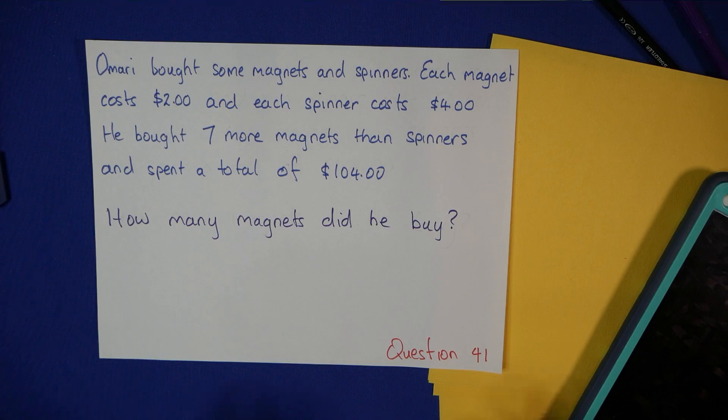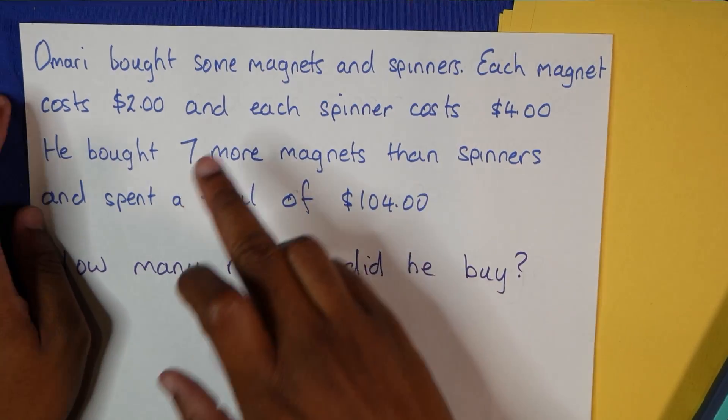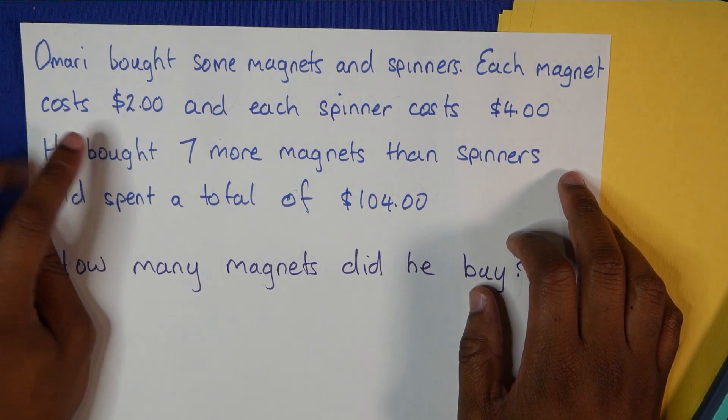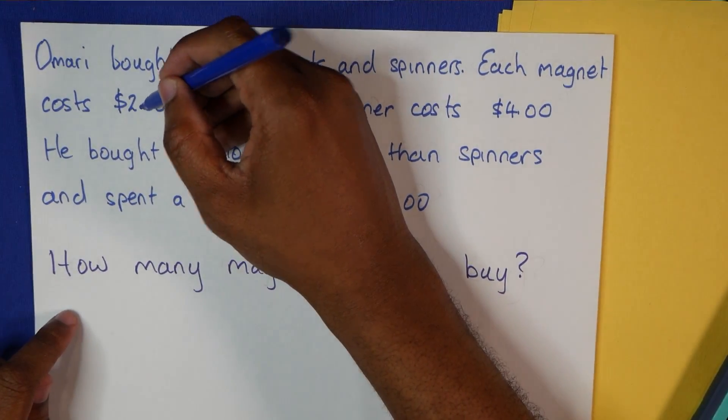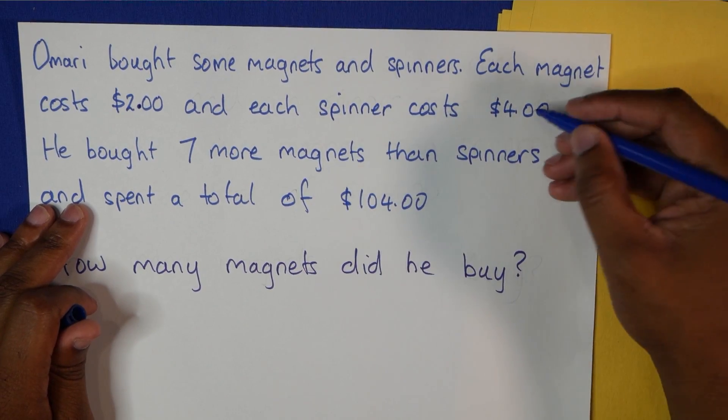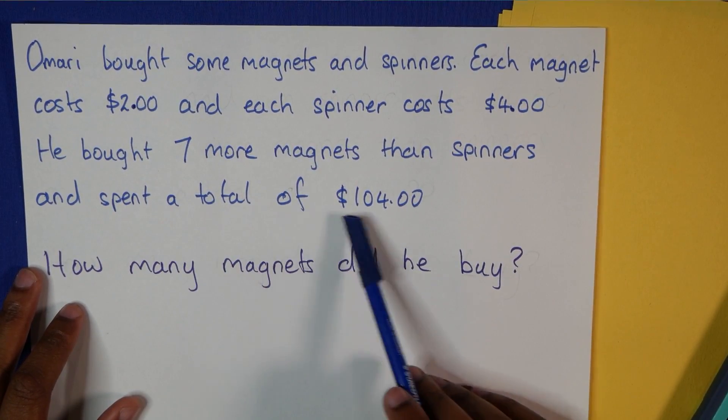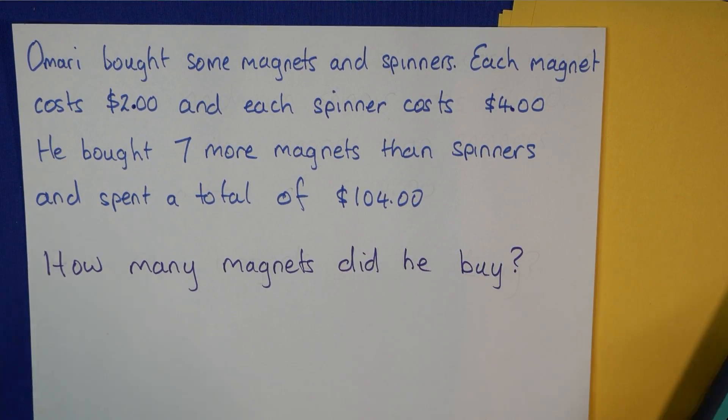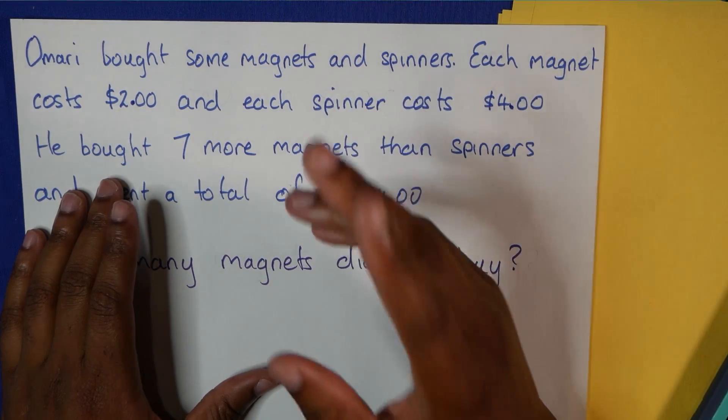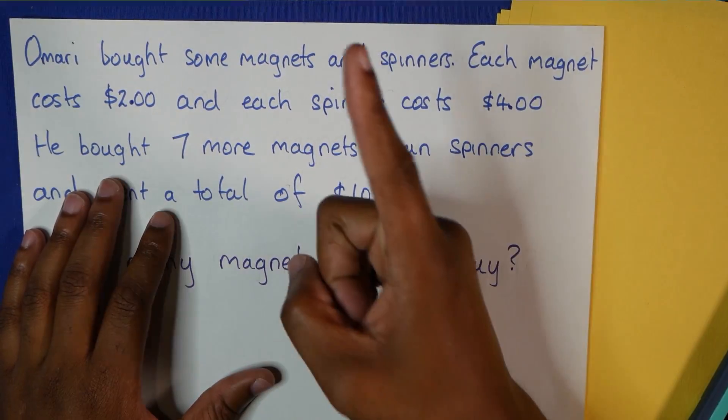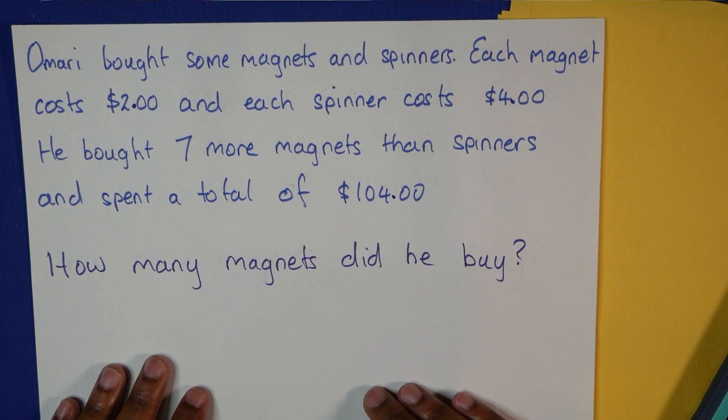First question in the third section, Question 41: Omari bought some magnets and spinners. Each magnet cost $2 and each spinner cost $4. He bought seven more magnets than spinners and spent a total of $104. How many magnets did he buy? Now, if you're a CSEC or CAPE student watching this, can you do this question? Check it out and see. Pause the video and see if you can do it.